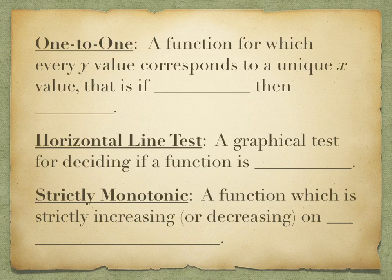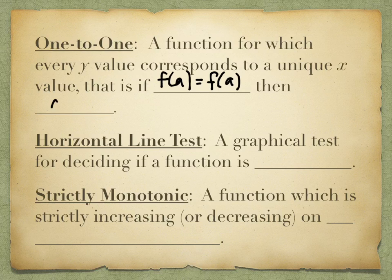A one-to-one function is a function for which every y value corresponds to a unique x value. That is, if f of a equals f of b — which are y values — so if the two y values are equal, then the only way that could have happened is if the x values would have been the same to begin with.